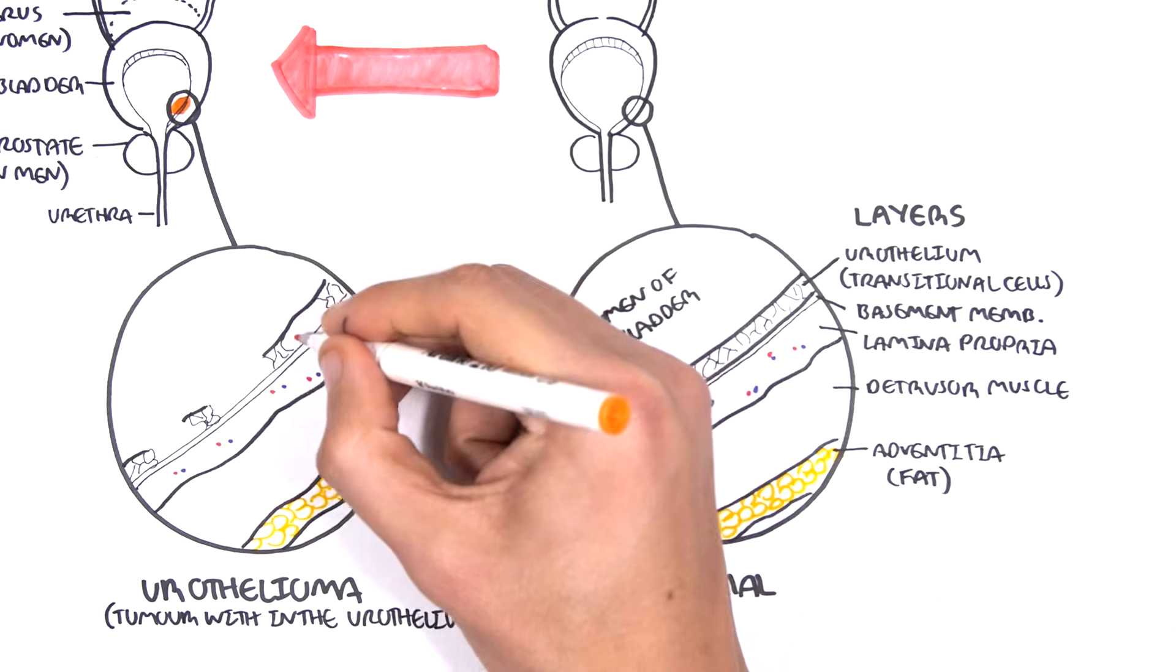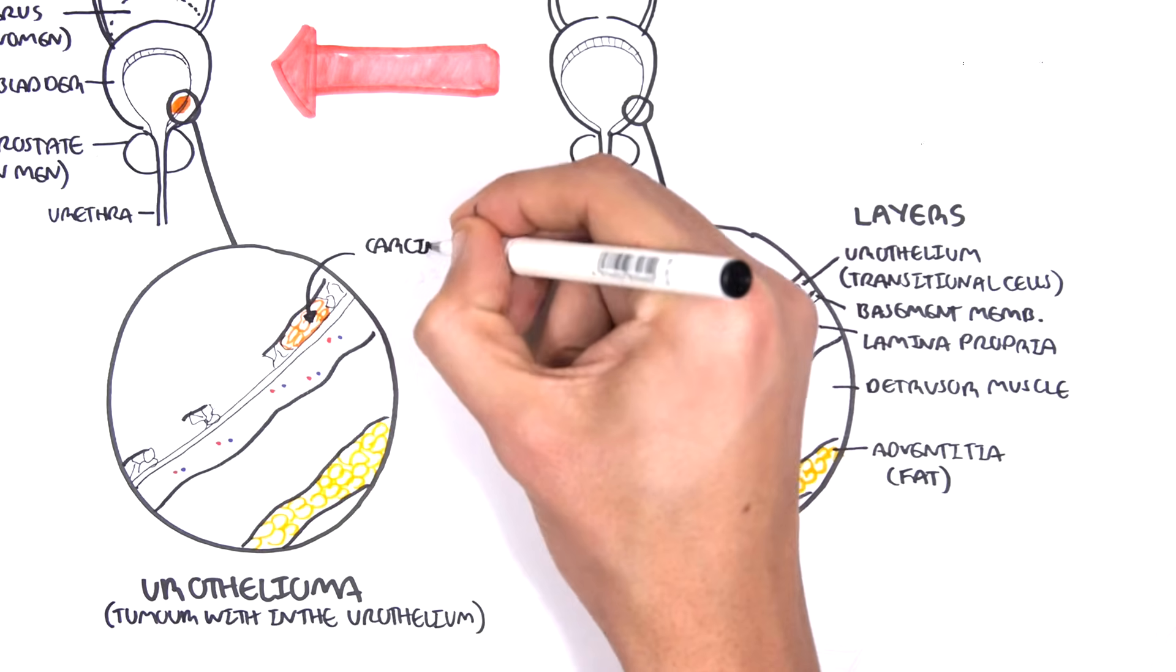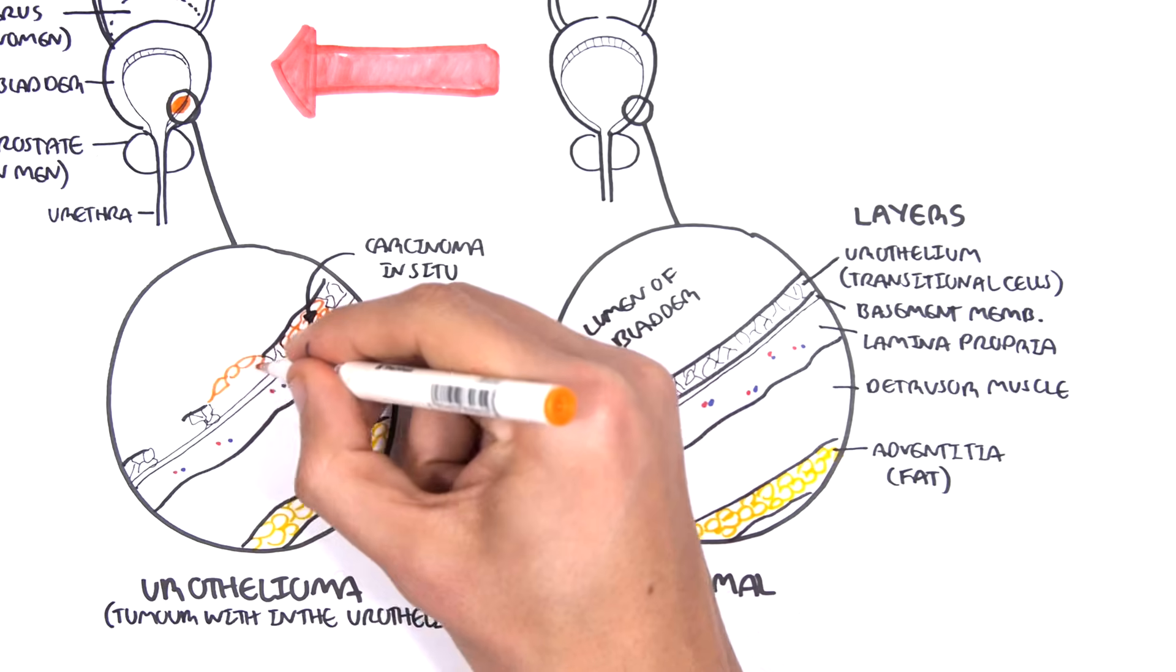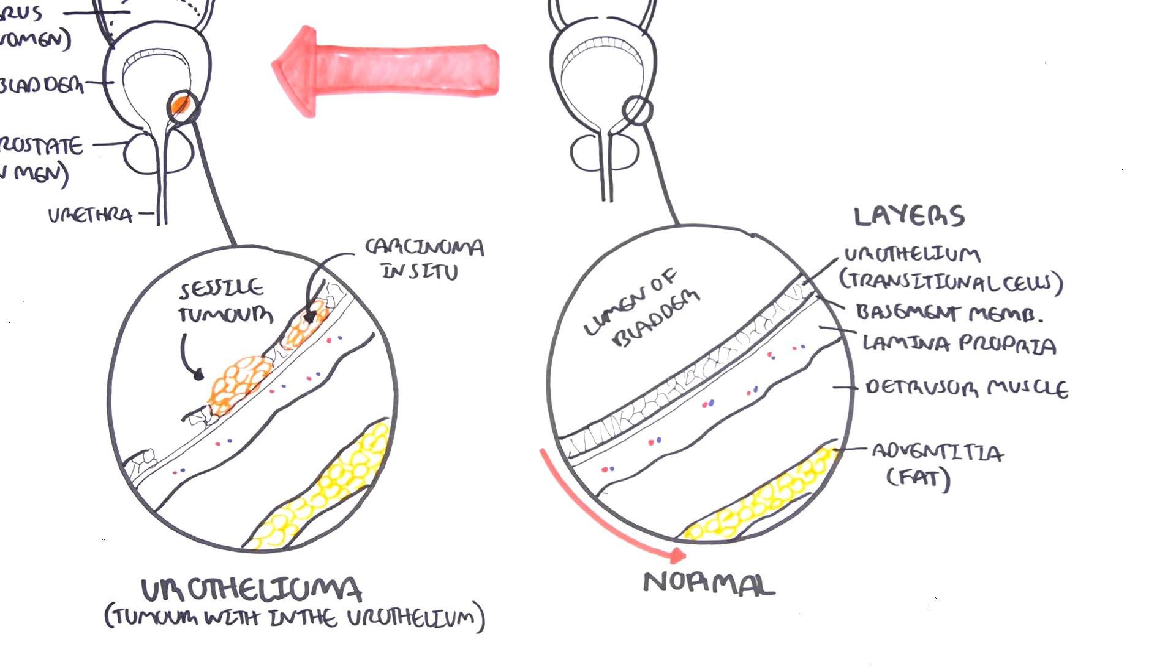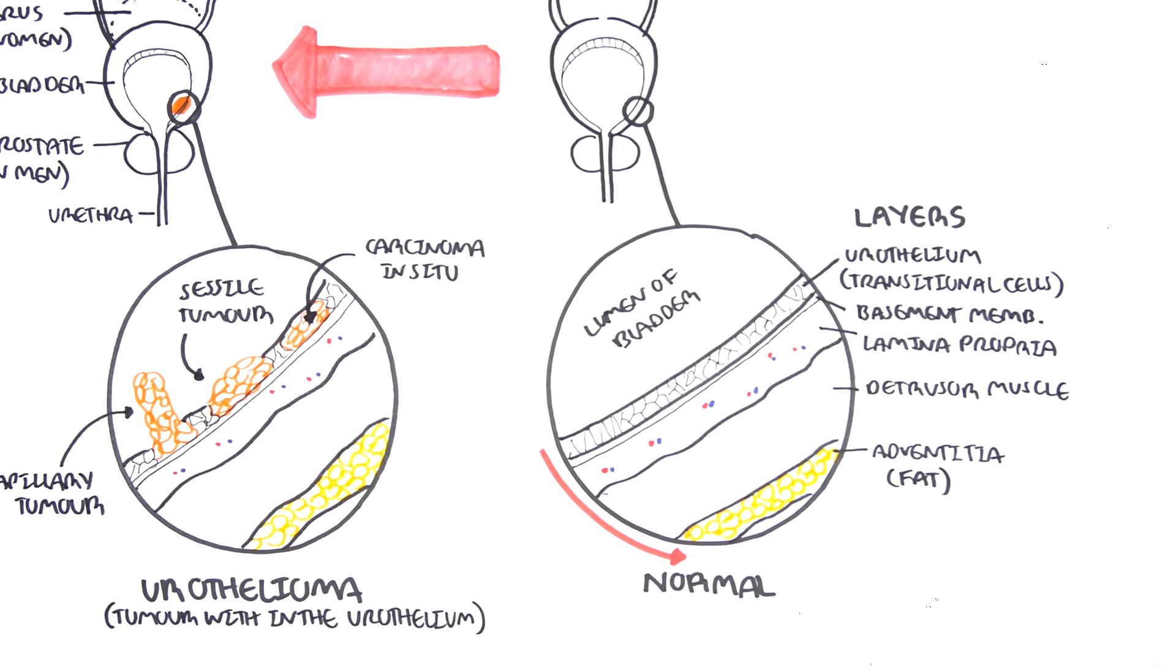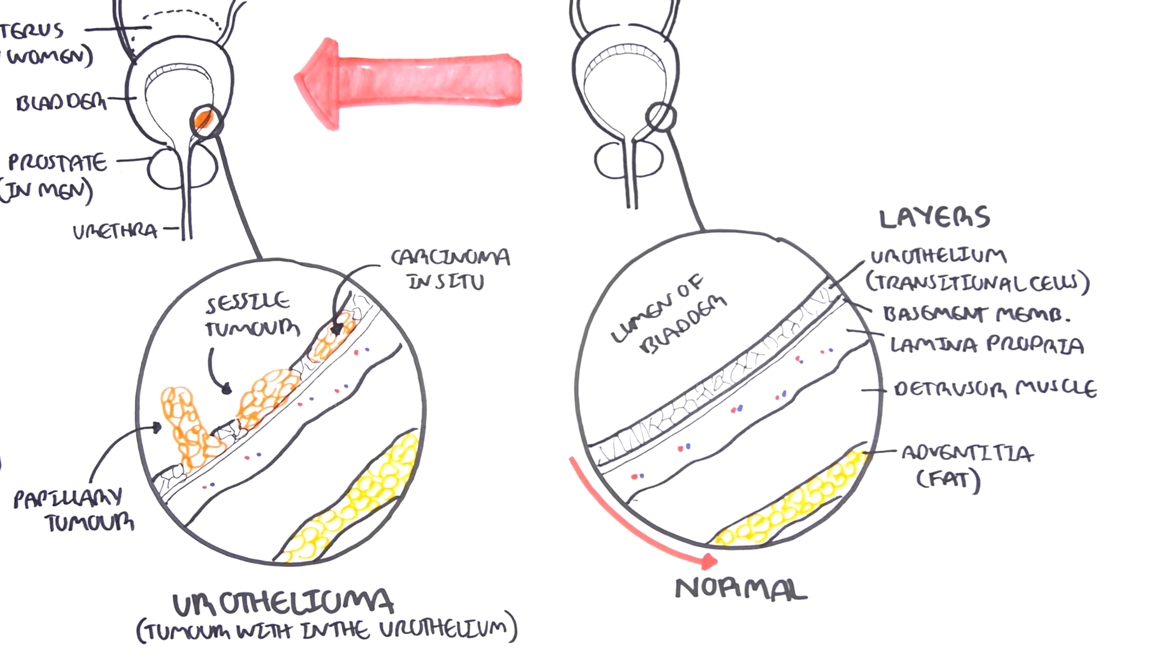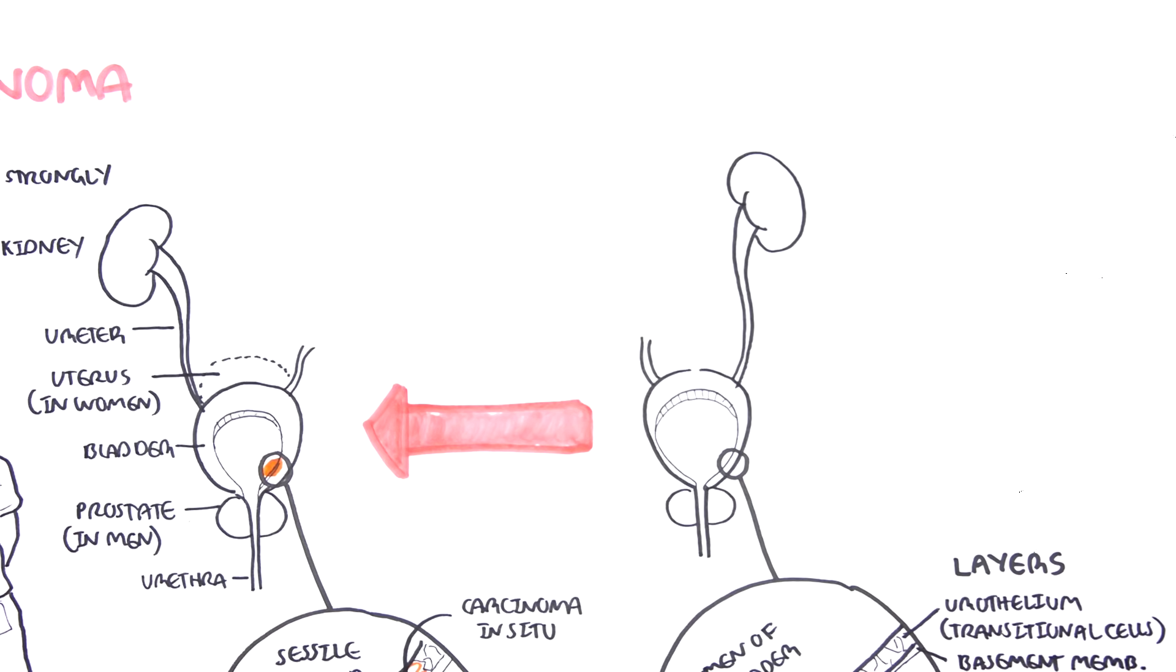Now there are a few types of urotheliomas. There is carcinoma in situ, which is essentially carcinoma confined to that layer. You have a sessile tumor or papillary tumors, which project out. These tumors can then subsequently keep growing and actually grow deeper and penetrate the other layers under it. This is where it becomes dangerous.